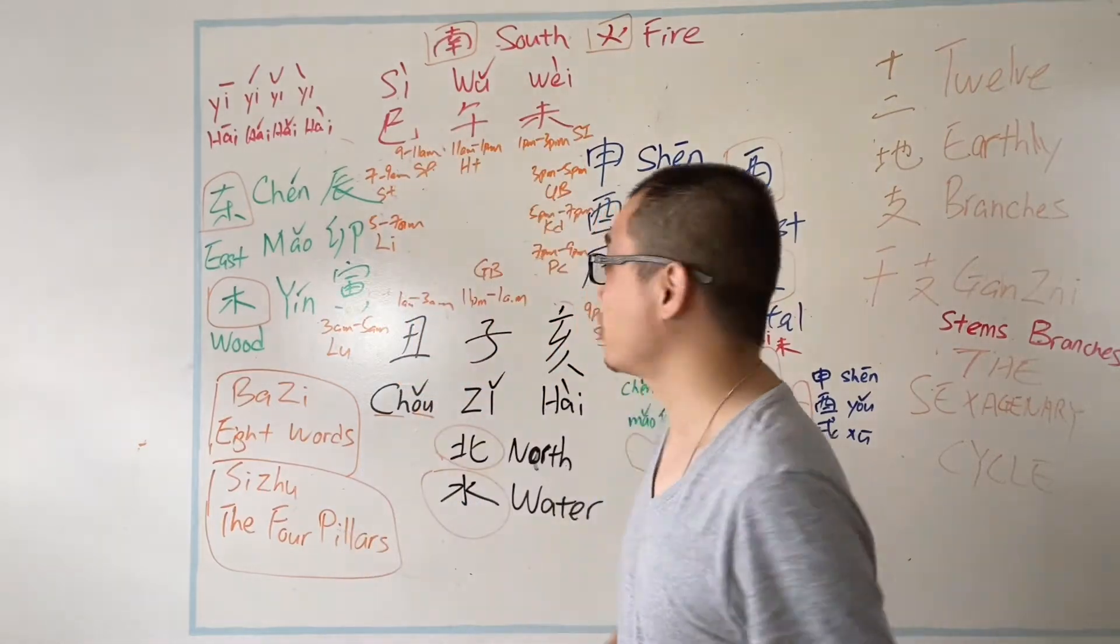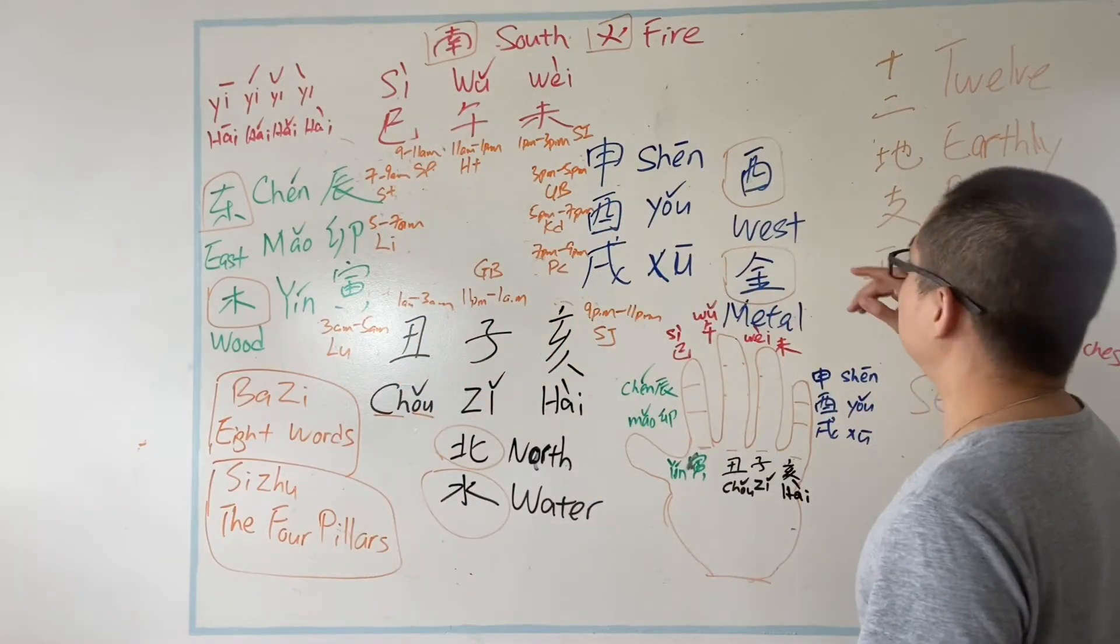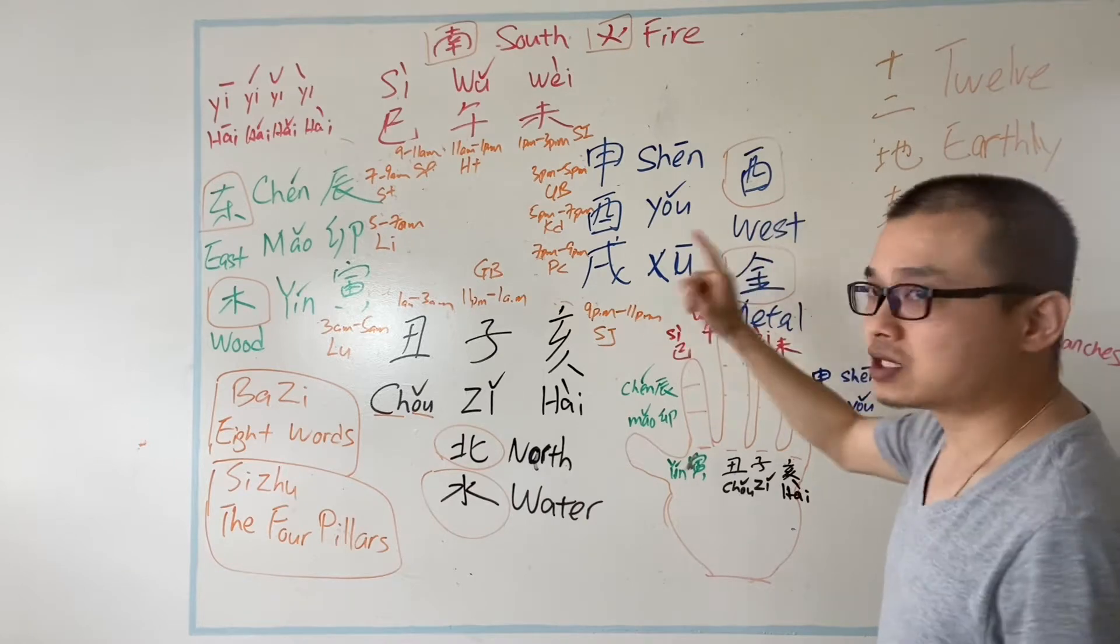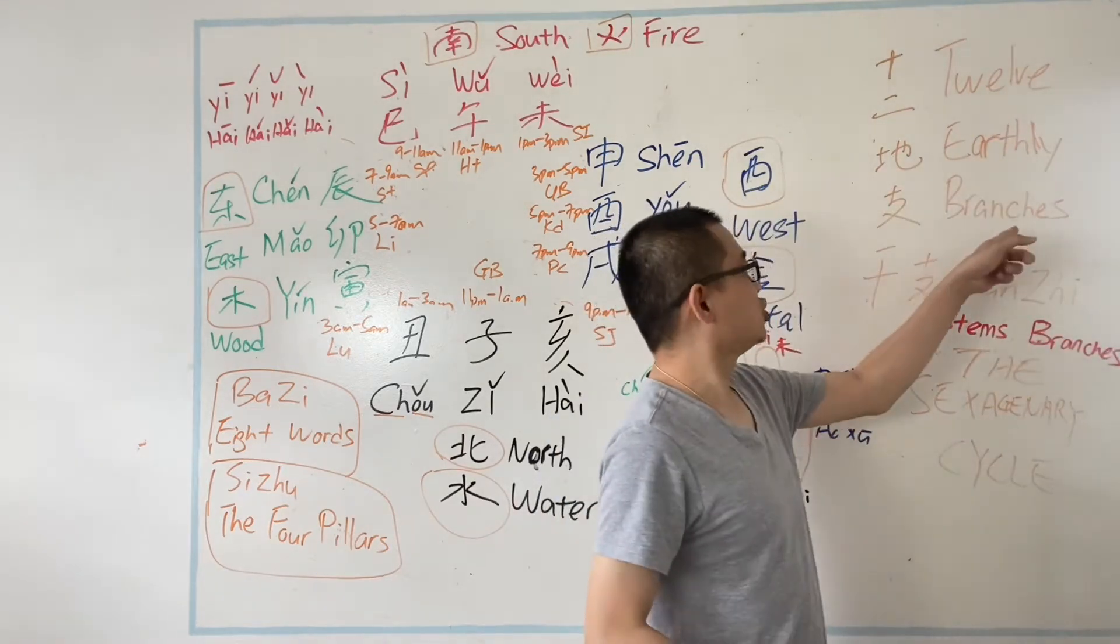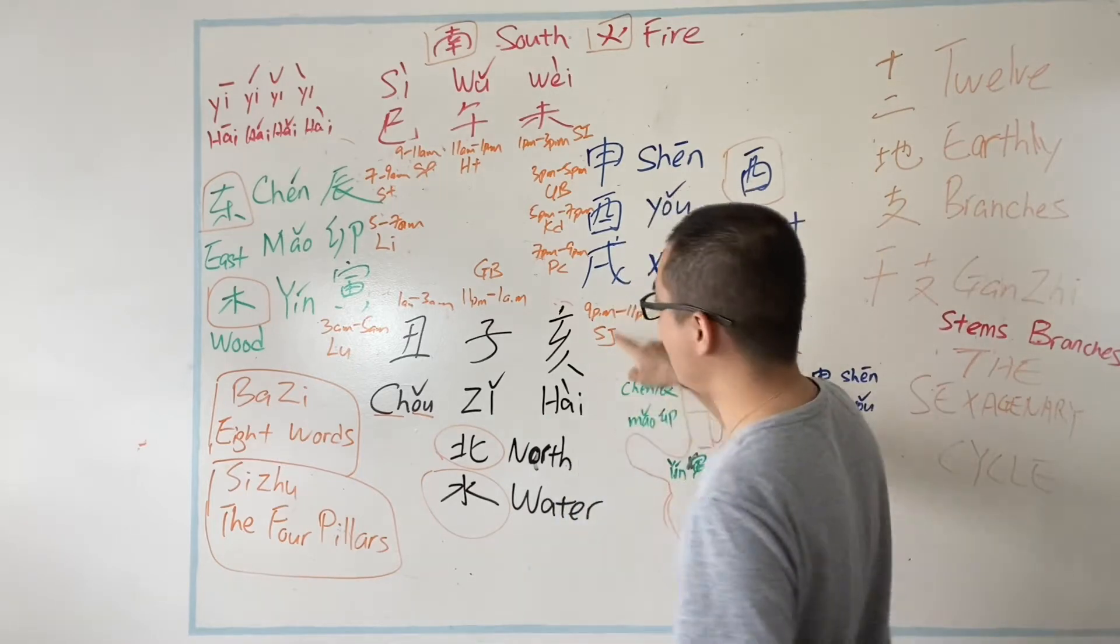In this video, I'm going to show you how the 地支, 十二地支, the 12 earthly branches over here.